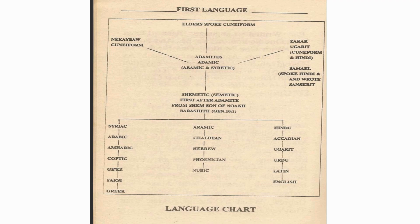Then we have the Adamites — Nikkeba and Zakhar's children started speaking Adamic. So we got Adamic and Sidiic, which came from cuneiform and Ugarit. And then we get all these other languages: Syriac, Arabic, Amharic, Coptic, Ge'ez, Farsi, Greek, Adamic, Chaldean, Hebrew, Phoenician, Nubic, Hindu, Akkadian, Ugarit, Urdu, Latin, English — all came from the same source in order of time periods and how they descended from each other.